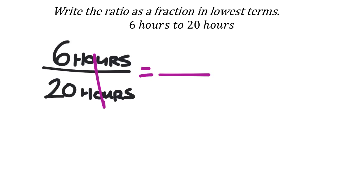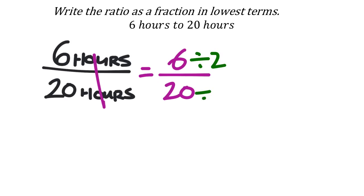So we have 6 over 20. Since 6 and 20 are both even, they're both divisible by 2, which gives us 3 to 10.